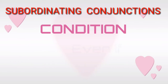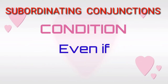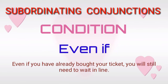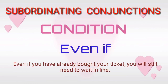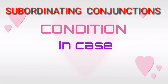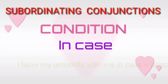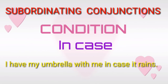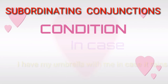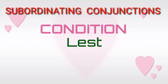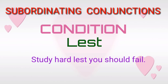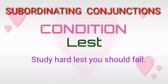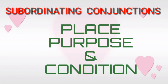Subordinating conjunctions of condition — 'even if.' For example: 'Even if you have already bought your ticket, you will still need to wait in line.' Subordinating conjunctions of condition — 'in case.' For example: 'I have my umbrella with me in case it rains.' Subordinating conjunctions of condition — 'lest.' For example: 'Study hard lest you should fail.'